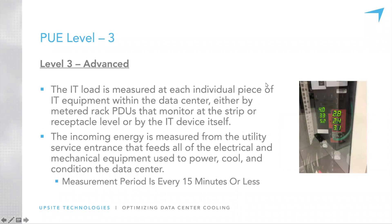PUE Level 3 is what the Green Grid considers advanced. The IT load is measured back to the power distribution units or power strips within the rack. Through our DCIM solution, we can see what our load is there. PUE Level 3 is essentially real-time, constantly measuring that load and allowing you to see where you are minute by minute.